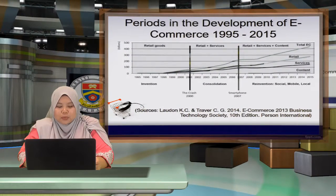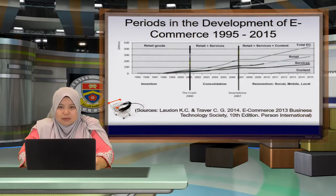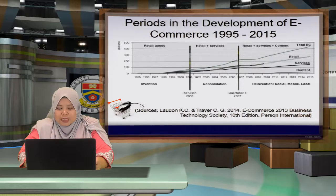This period was known as the dot-com boom. Many companies transformed their conventional businesses into electronic commerce. Companies used the web to advertise their products, selling and purchasing retail goods over the internet, and the stock market valuation for all the dot-com companies reached their peak.